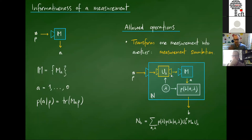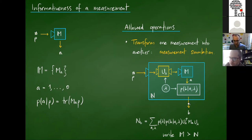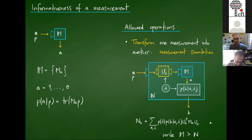So this is our resource theory: we have useful measurements, and given a useful measurement I can simulate other measurements using this simulation procedure. I want to quantify how good a measurement is — how resourceful it is. We use a partial order notation common in the literature: if M can simulate N, we write that M is before N in this partial order of measurement simulation, meaning M is better than N.